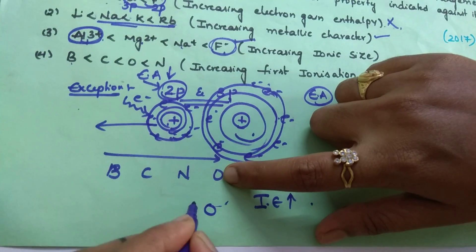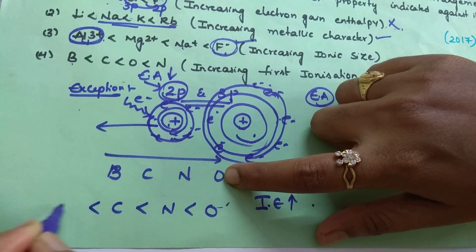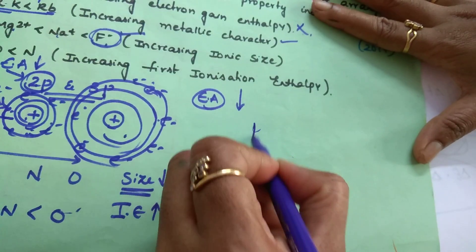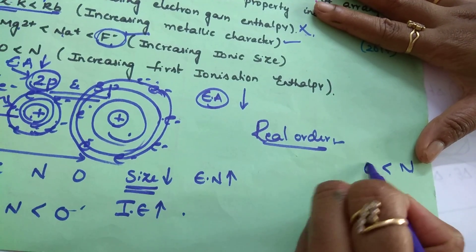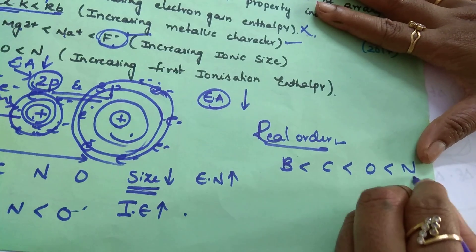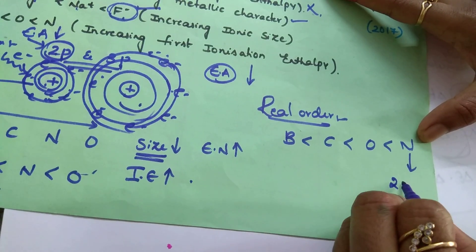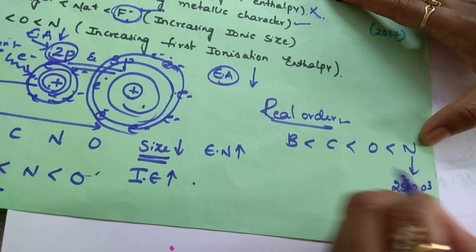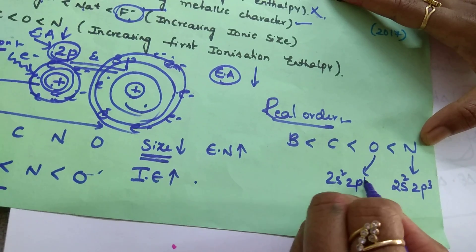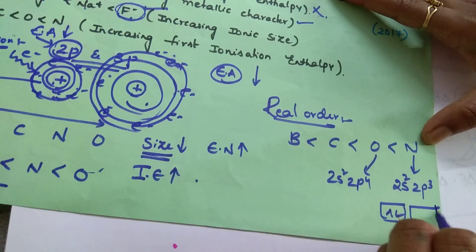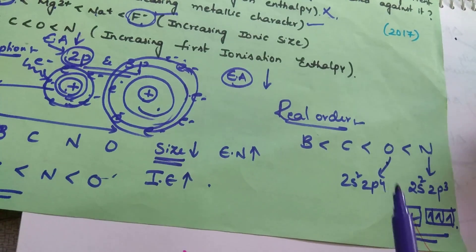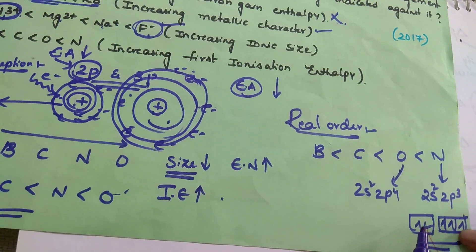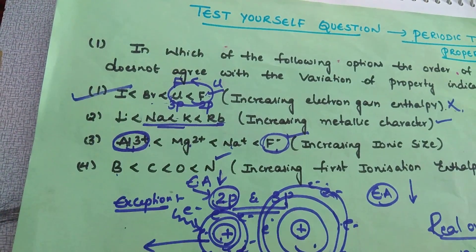So what is the expected order? Oxygen will be having more ionization energy than nitrogen, then carbon, then boron. But the real order is: nitrogen is more than oxygen, then carbon, then boron — due to the half-filled electronic configuration of nitrogen. The valence configuration of nitrogen is 2s2 2p3, and oxygen is 2s2 2p4. Due to the exactly half-filled electronic configuration of nitrogen, which is more stable, you must apply more energy to remove an electron from nitrogen. So the correct order has nitrogen above oxygen. This is the correct statement. The wrong statement is the first option.